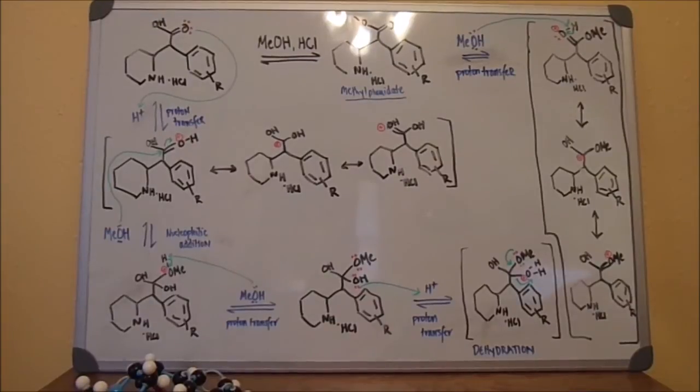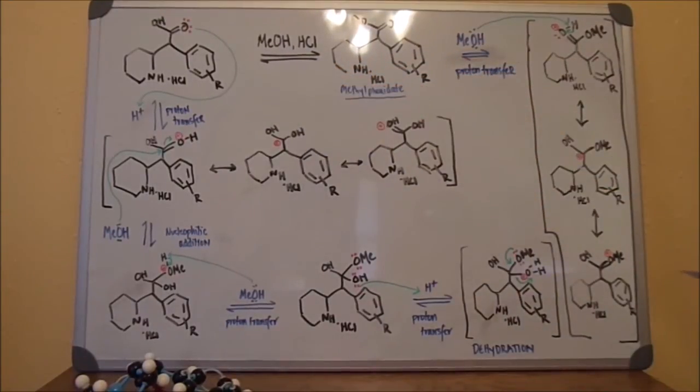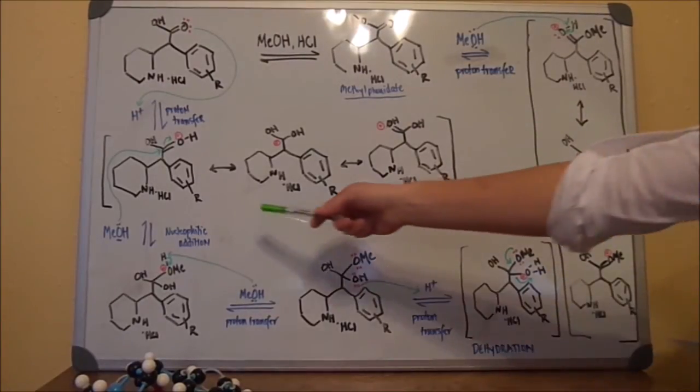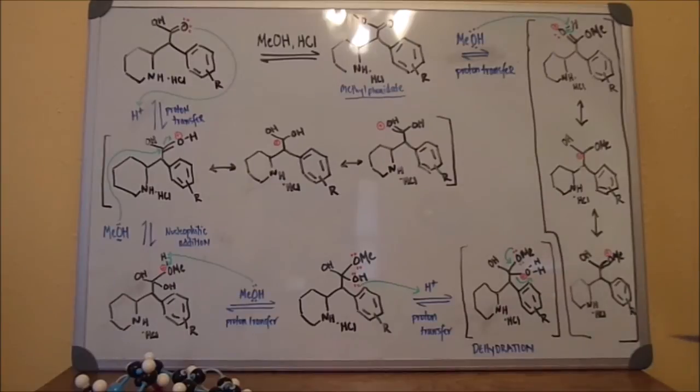The structure in the upper left hand corner contains a carboxylic acid functional group, which undergoes a proton transfer to produce three resonant structures that are stabilized.